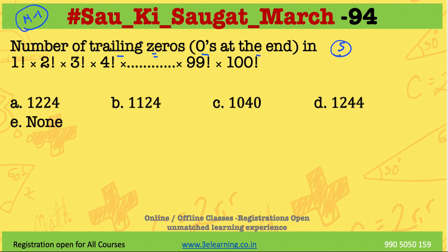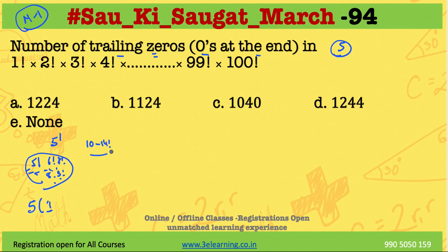It means we are looking for the factor of 5. Five raised to power one — where will you get it from? From 5 factorial to 6 factorial to 7 factorial to 8 factorial to 9 factorial. That means from 5 factorial to 9 factorial, we have five values and all have power one. From 10 to 14 factorial, there are 5 squared — two fives. Similarly, from 15 to 19, we have three fives, and so on up to 99.